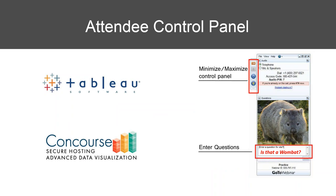Your attendee control panel for GoToWebinar is a big, unwieldy thing, so you'll want to take the section below the WOMBAT that's for questions and pop that out so that you can ask questions during the webinar. We'll be keeping an eye on that and answering questions as we go along. Hit the red arrow at the top to collapse the control panel so you can see more of the screen. And WOMBAT fact of the week: WOMBATs have the largest brain of any marsupial, making them the most intelligent of the marsupials.